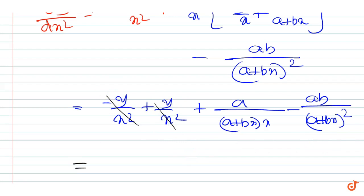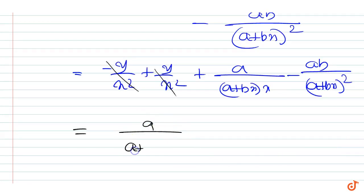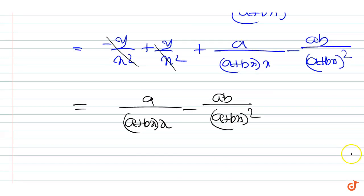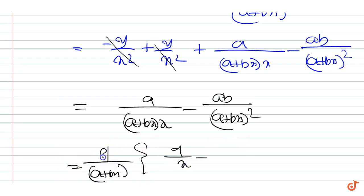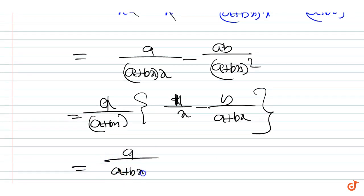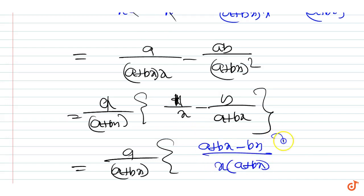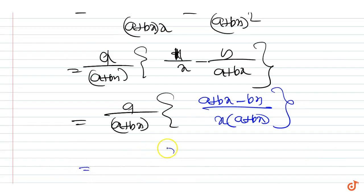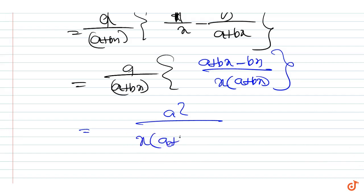The first two terms cancel, so the remaining term is a upon (a plus bx) into x minus ab upon (a plus bx) the whole square. Simplifying, this equals a upon (a plus bx) into (a plus bx minus bx) by x into (a plus bx), which gives a square upon x into (a plus bx) the whole square.